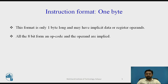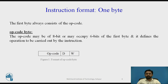Now, the instruction format of one-byte length: this format is only one byte long and may have implied data or register operands. The least significant 6 bits of the opcode are used to specify the register operand, if any; otherwise all 8 bits form an opcode and the operands are implied. In figure 1, the opcode may be 8 bits or may occupy 6 bits of the first byte, and it defines the operation to be carried out by the instruction. The remaining 2 bits are the D and W bits.